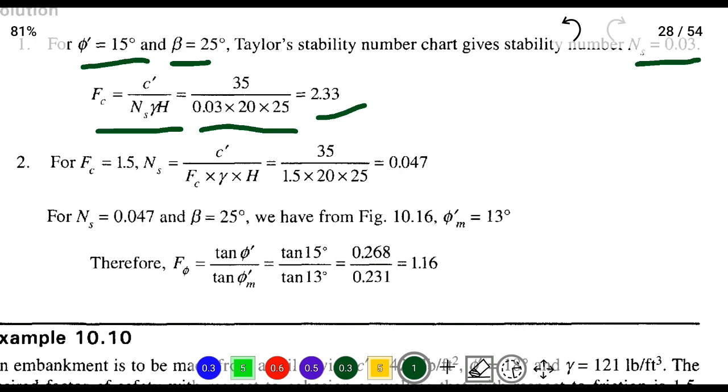We know the Fc value is 1.5. Substituting: 35/(1.5 × 20 × 25), the cohesion is the same, height is the same, unit weight is the same. From that we can find the Ns value, the stability number is 0.047.